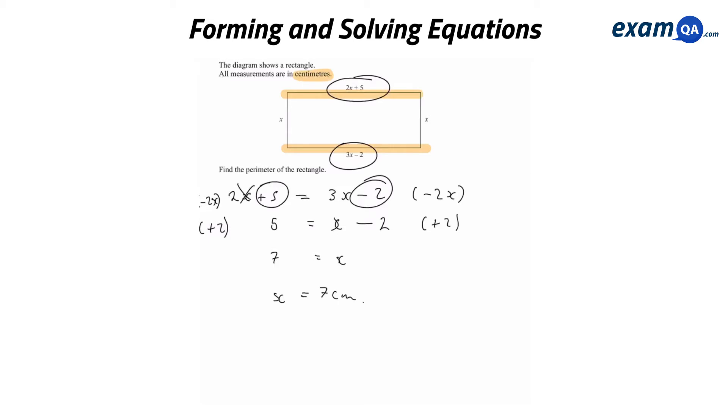Now, we're finished with working out what x was. But we have to be careful because that's not the end of the question. The question says, find the perimeter of the rectangle. What does perimeter mean? Perimeter just means what is the length of the outside. It's this plus this plus this plus this. So I'm going to do exactly that. We have x plus 3x minus 2 plus x plus 2x plus 5. If we simplify that...